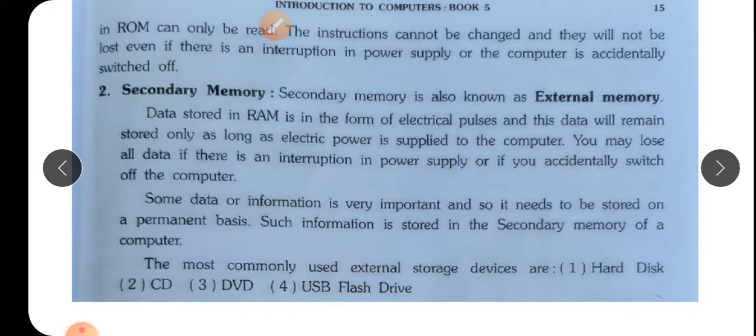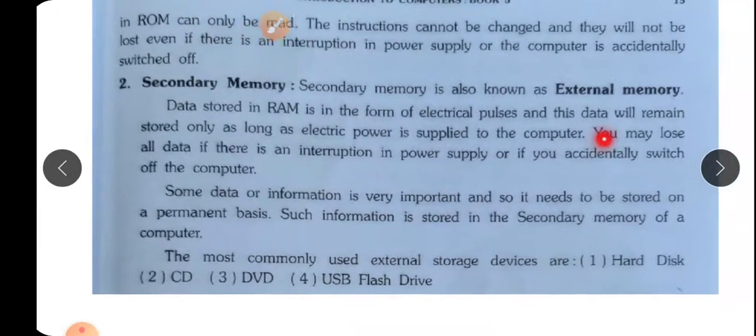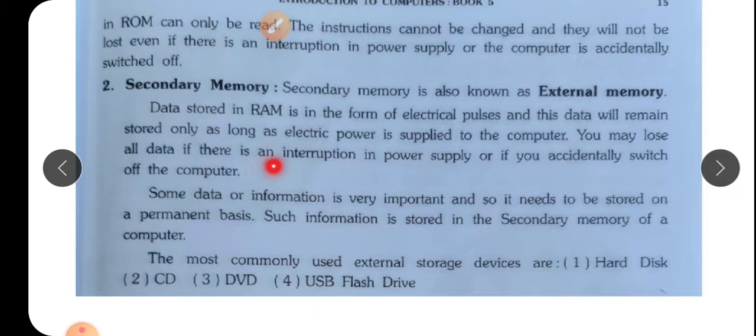और जो भी RAM में है वो तो temporary है जब तक electricity है electric pulse, electric power है. Electric power चला गया तो electric pulse का भी connection break हो जाएगा और सारा information चला जाएगा. You may lose all data if there is an interruption in power supply or if you accidentally switch off the computer. या तो light चली गई या फिर गलती से computer का बटन off हो गया तो सारा information lost.